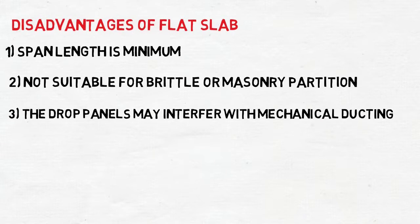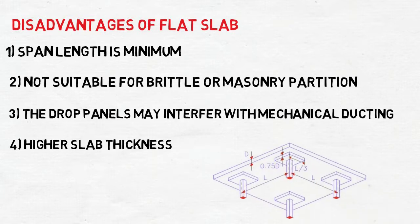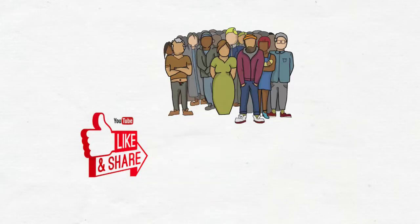Finally, higher slab thickness. Compared to a typical reinforced concrete two-way slab system, the thickness of flat slabs is higher. It makes sense because there are no beams or girders, meaning a higher thickness must be used. These are the advantages and disadvantages of using a flat slab. Thanks for watching. Do not forget to like and share this video with friends who want to know the advantages and disadvantages of using a flat slab. Bye-bye.